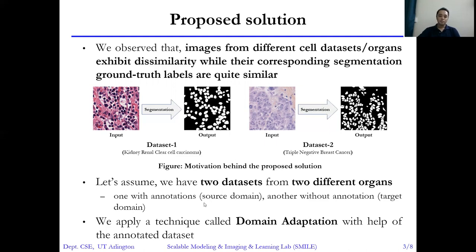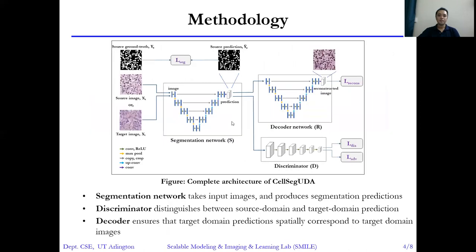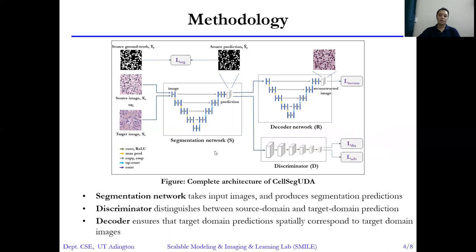At first, we propose an unsupervised domain adaptation network, then we extend it to semi-supervised domain adaptation. Here is the complete architecture of our unsupervised domain adaptation network. There are three modules. The first is the segmentation network, which takes input images and produces segmentation predictions. During training, we use segmentation loss, adversarial loss, and reconstruction loss.